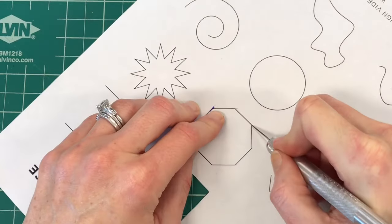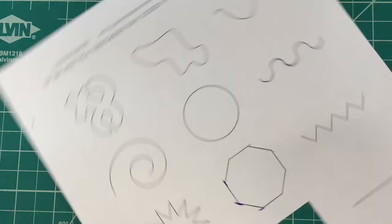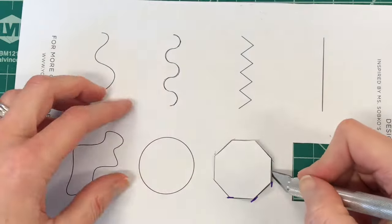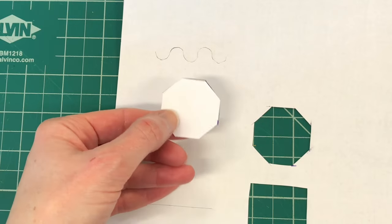So do you see how I'm cutting a little bit longer than I have to? Where that purple line is I just extended the cut a little bit longer. I'm going to do that all the way around and then my shape will be very easy to remove.